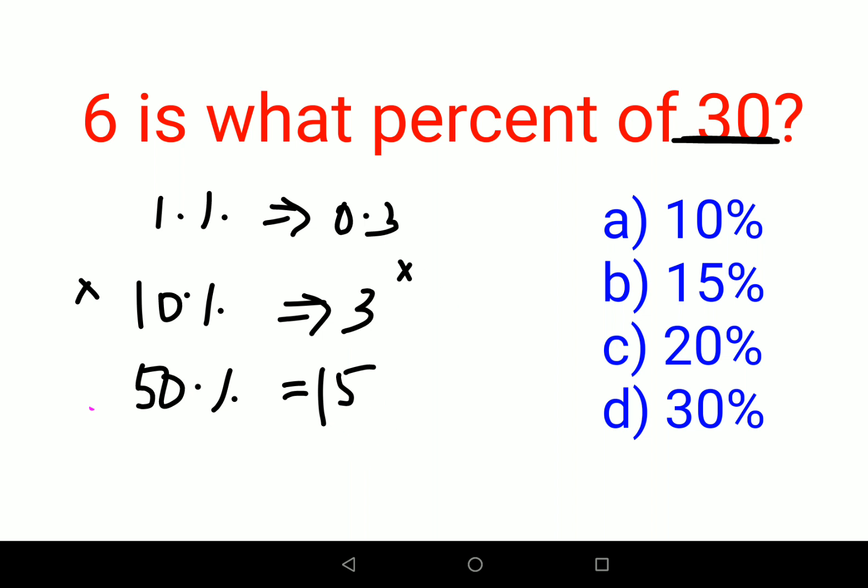Right? So here, what you should be doing is, if I want your answer to be 6, I should be multiplying both sides by 2. So here, again, 2 into 10, that gets you 20. So option C is your answer. So these are three ways in which you can actually solve this. You can stick to whatever works for you all.